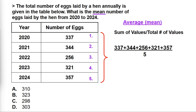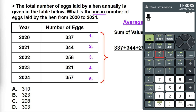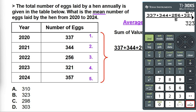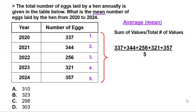Now we can plug this equation into our calculator. We enter the sum of the egg values: 337 + 344 + 256 + 321 + 357, then divide by 5. Our answer is 323, making our answer option B.